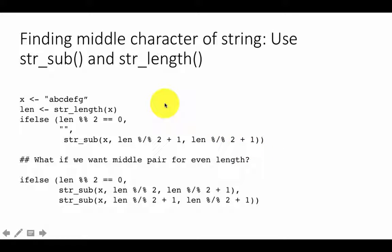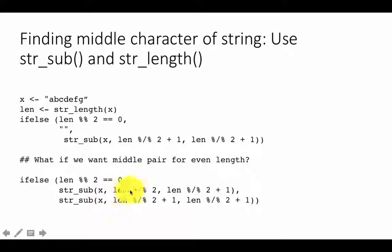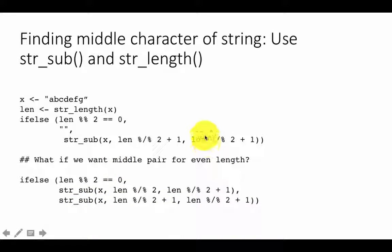Alternatively, we can interpret the question differently: if odd length, give the actual middle character; if even length, give the two middle characters. In that case, for even length we say str_sub starting from len %/% 2 and ending at len %/% 2 + 1 — so for a 4-character string, that would be positions 2 and 3. And for odd length, it's still the same as before. You can combine these functions to do intelligent string processing — typically you'll use many functions together to achieve your goal.